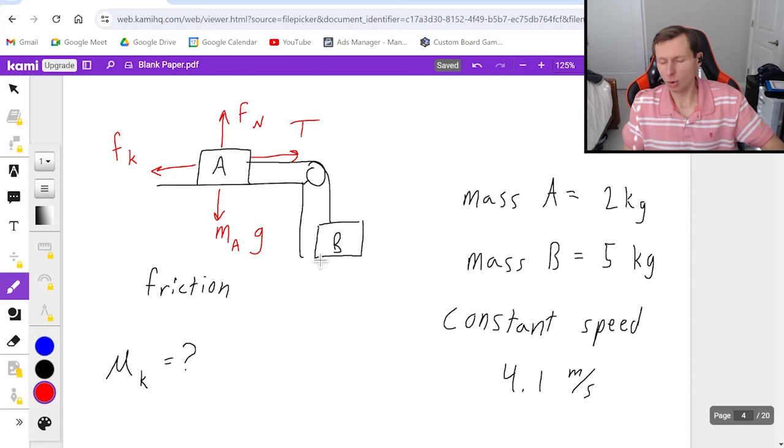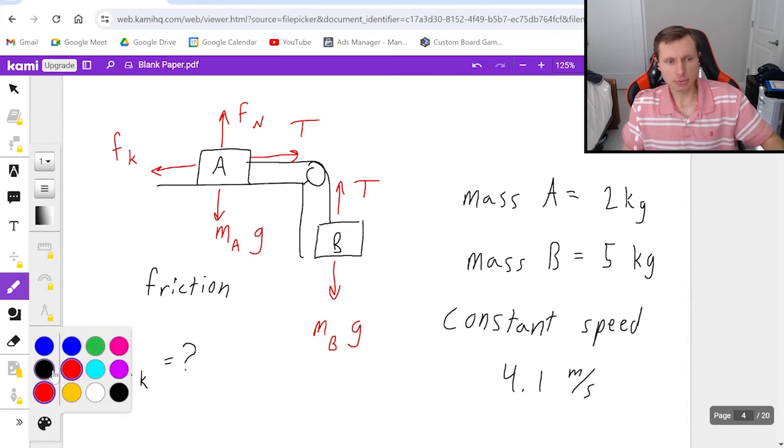And yes, it is kinetic because we have a constant speed. We're moving. So that's it for block A. Now for block B, only two forces: gravity going down, which I call m_B*g, and a tension force pointing up. Now, which tension force is greater? The one connected to A or the one connected to B? The answer is trick question. They're the same because of Newton's third law. They are an equal and opposite reaction pair forces. So that's it for the free body diagram.